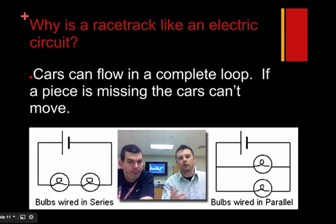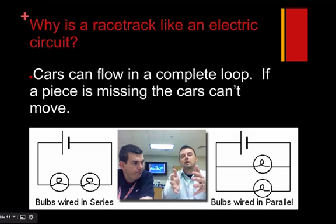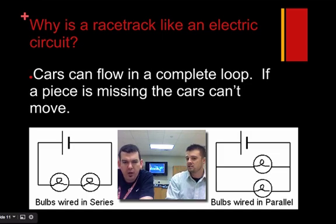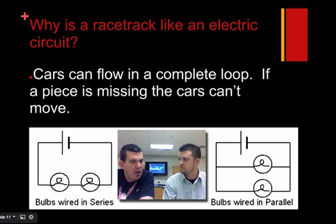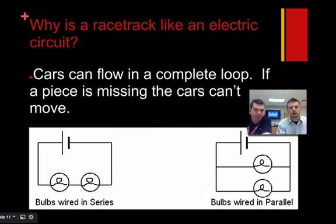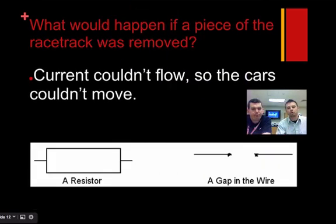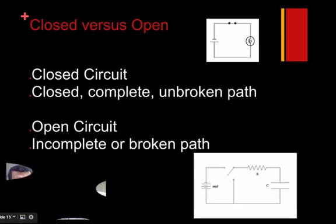So a racetrack, if you think of like NASCAR, for example, it's kind of like a circuit. Cars can flow in that complete loop, but if one piece of the NASCAR, the Daytona 500 was missing, let's say just a piece of the track just sort of disappeared, well, those cars would have a really tough time getting all the way around that loop. And you would think that they could jump that gap, but actually it takes a huge amount of charges to do that, and electrons don't like to go down any pathways unless they're forced to.